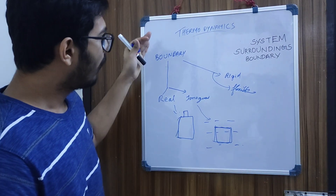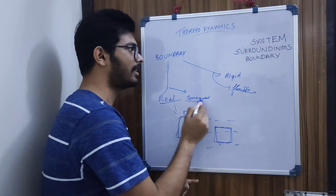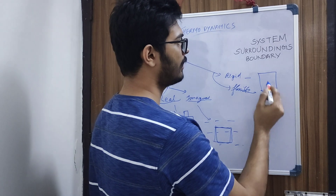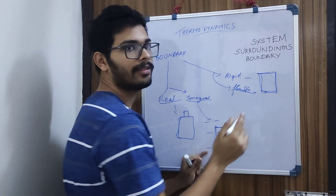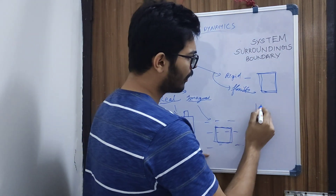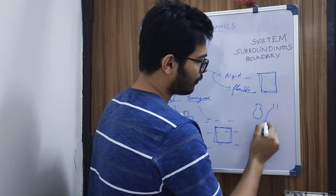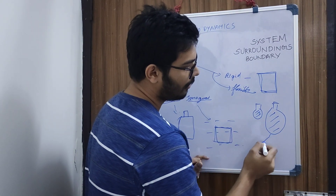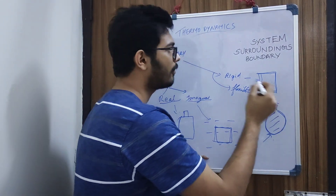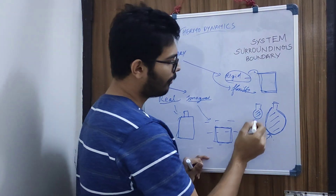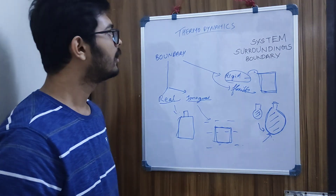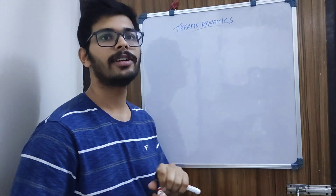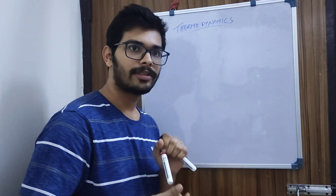The boundary is the wall separating the system and surroundings. It can be real or imaginary. In a rigid boundary, we have steel — the steel is not moving. For a flexible boundary, we use a balloon. The balloon changes in size as the system changes. It is not a rigid boundary — it is a moving boundary, and the shape and size change. This is the basic concept of system, surroundings, and boundary. In this video, we will talk about properties and states.